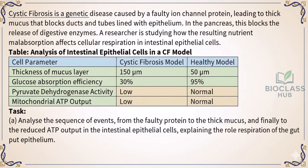Item 1. Cystic fibrosis is a genetic disease caused by a faulty ion channel protein, leading to thick mucus that blocks ducts and tubes lined with epithelium. In the pancreas, this blocks the release of digestive enzymes. A researcher is studying how the resulting nutrient malabsorption affects cellular respiration in intestinal epithelial cells.